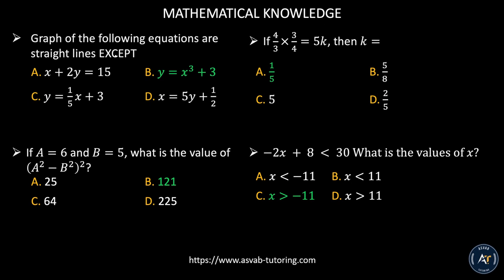Which of the following equations does NOT graph as a straight line? A straight line equation has x and y each with an exponent of 1. If any variable has an exponent greater than or less than 1, it's not a straight line. Looking at the options, all of them have exponent 1 for x except one, which produces a curve. The correct answer is letter B.